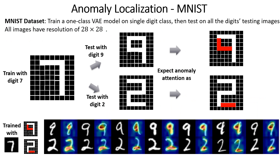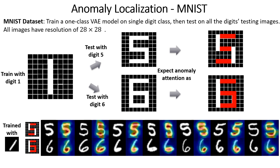We show our first results on the MNIST dataset. When we train with digits 0 through 7, then test on a 9 as input, the expected anomaly regions are highlighted by red color, and are represented by high responses in the attention maps shown at the bottom. Similarly, testing results with digits 0 through 2 are shown as well. One more example on MNIST shows a VAE trained with digit 1, then tested on 5 and 6.